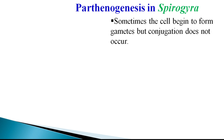Sometimes the cells of Spirogyra begin to form gametes as part of a sexual mode of reproduction — that process is called gametogenesis. But this gametogenesis, due to certain reasons, should enter into conjugation; however, conjugation does not take place, so it appears to be interrupted or fails at some stage of the process of union of gametes.